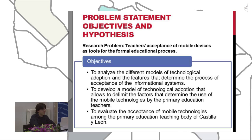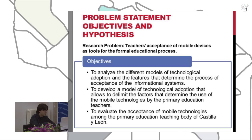We propose an extended TAM model with new constructs and theories in order to study the mobile technologies acceptance among primary education teachers, dealing with the problem of teachers' acceptance of mobile devices as tools for the formal educational process. We propose three main objectives: to analyze the different models of technological adoption and the features that have determined the process of acceptance; to develop a model of technological adoption that allows to identify the factors of mobile technology use by primary education teachers; and to evaluate those factors in the primary education teaching community in Castilla-La Mancha.